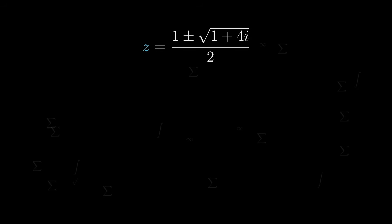1 plus or minus root 1 plus 4i over 2. The big issue that I personally take with this: this is not in the standard form of a complex number. Typically, complex numbers are of the form z equals a plus bi, where a and b are real numbers. This does not have that form.